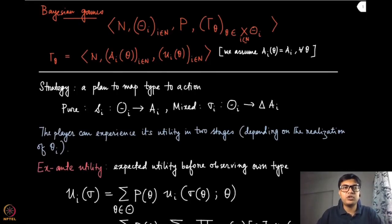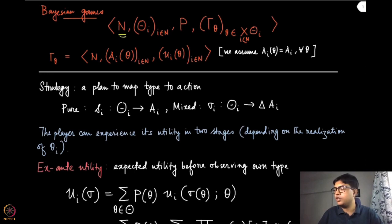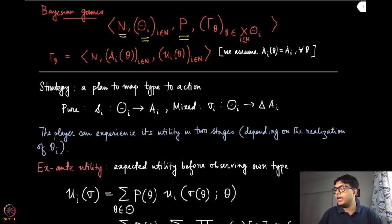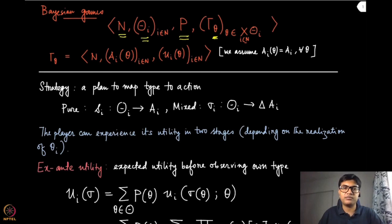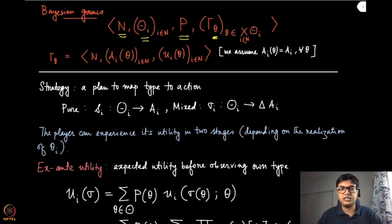From the discussions of the previous module, we know what a Bayesian game is. This is essentially given by a tuple where you have the players, the type sets for each of these players, a common prior with which the whole type profile is chosen, and for each type profile lowercase theta, there is a normal form game given by gamma of theta. Now we are going to look at the different strategies in this game, and we will also see some examples to understand how these strategies are being used.